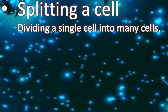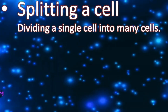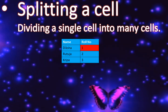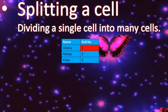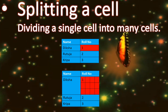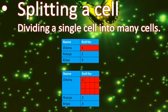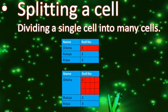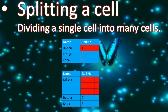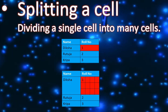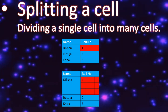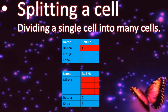Next is splitting the cell. Splitting means a single cell is divided into a number of cells. For example, in this table the red highlighted cell I want to split. In the second table, the red highlighted cell has been split into three rows and four columns, resulting in 12 cells. This is called splitting.